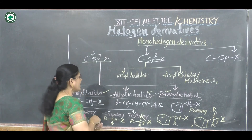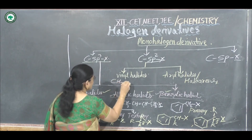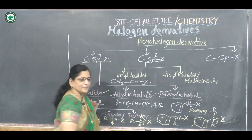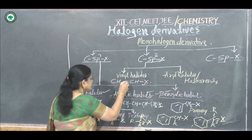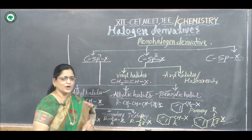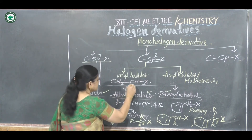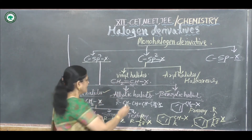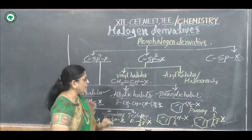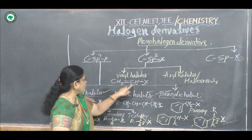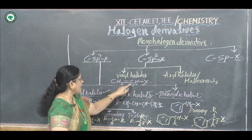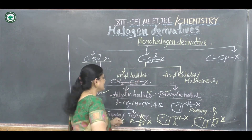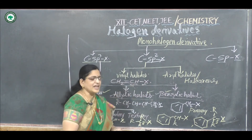Vinyl halides: for example CH2=CHX. The halogen atom is bonded to a carbon atom that is part of a carbon-carbon double bond, making it an sp2 type of hybridized carbon atom. Such compounds are called vinyl halides. If chlorine is the halogen, the compound is called vinyl chloride.